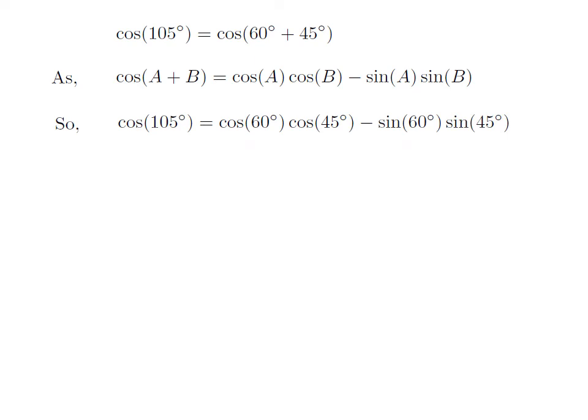To find cosine of 105 degrees, we just replace A with 60 degrees and B with 45 degrees in the above formula. So cosine of 105 degrees equals cosine of 60 degrees into cosine of 45 degrees minus sine of 60 degrees into sine of 45 degrees.